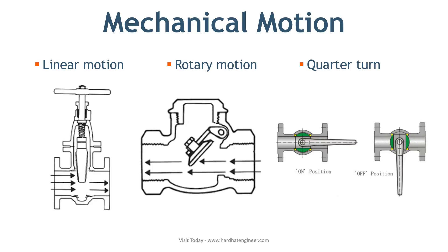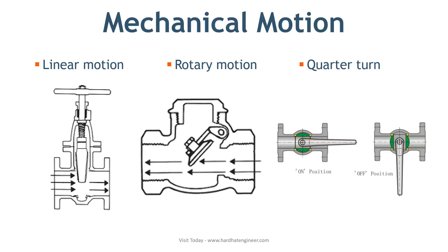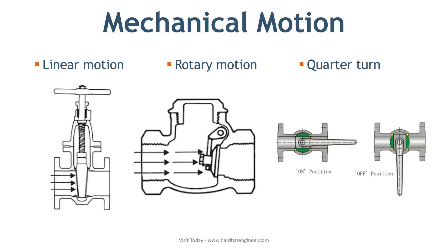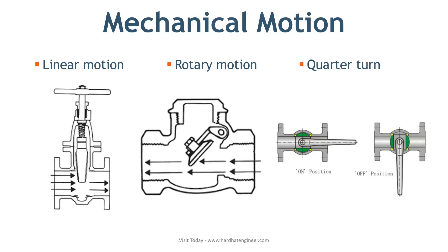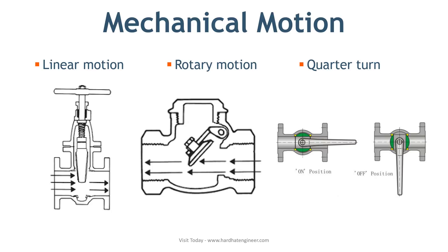In linear motion valves, a closure member moves in a straight line to allow, stop, or throttle the flow — as in gate, globe, diaphragm, pinch, and lift check valves.